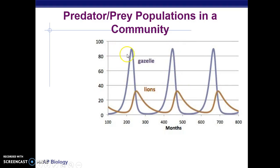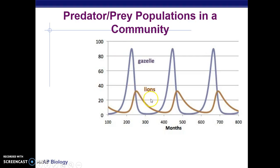There's an equilibrium amount present for gazelles and for lions, and this equilibrium keeps the community stable. The problem is, if some disease wiped out the gazelles, the lions would have nothing to eat, and the lion population would go down.